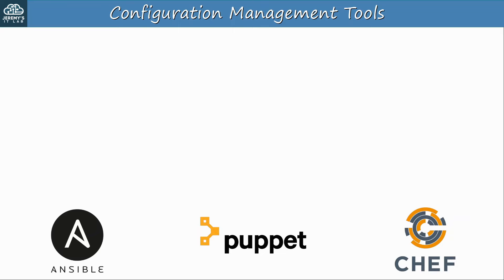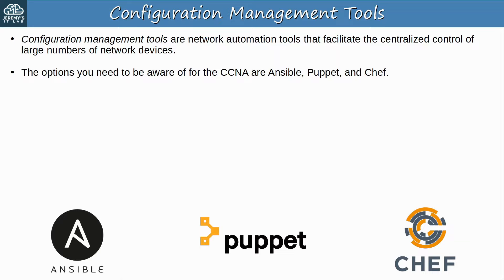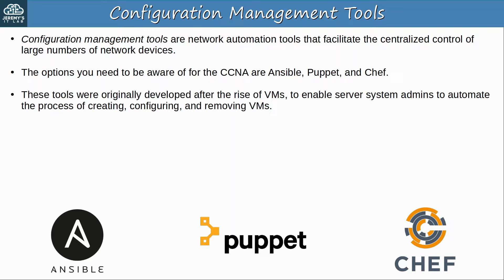Configuration management tools are network automation tools that facilitate the centralized control of large numbers of network devices. They can be useful in networks of any size, but typically they're used in larger networks. The options you need to be aware of for the CCNA are Ansible, Puppet, and Chef. When it comes to managing network devices, that's also the order of their popularity: Ansible first, Puppet second, and Chef third. These tools weren't originally developed for the management of network devices — they were originally developed after the rise of VMs, to enable server system admins to automate the process of creating, configuring, and removing VMs. But these days they are also widely used to manage network devices, especially Ansible.